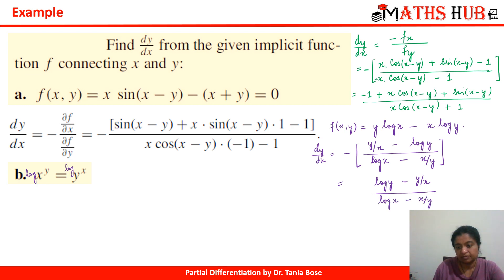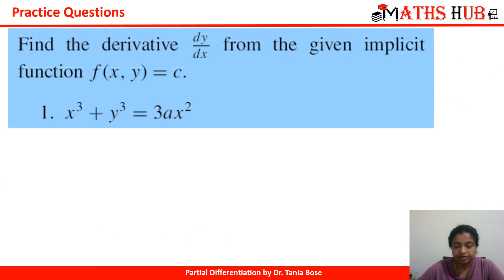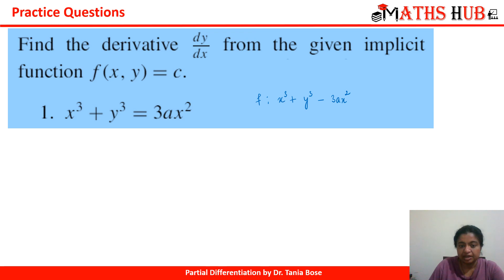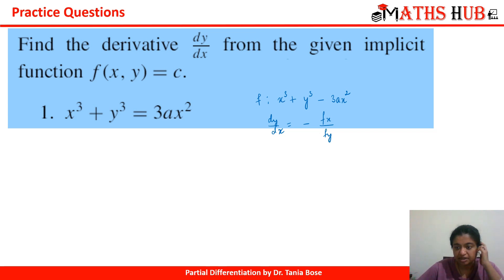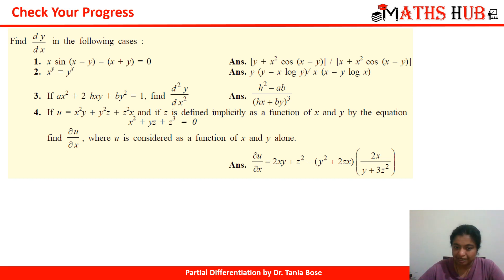Now you can try this question: find dy/dx for the function x³ + y³ = 3ax². Define f as x³ + y³ − 3ax² = 0, then calculate dy/dx as −fx / fy. After computing the derivatives, you will find that the answer comes out to be (2ax − x²) divided by y².